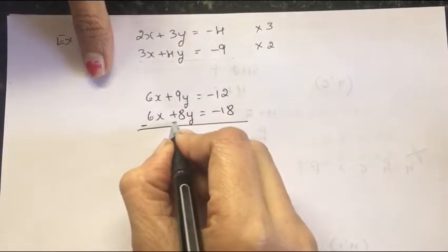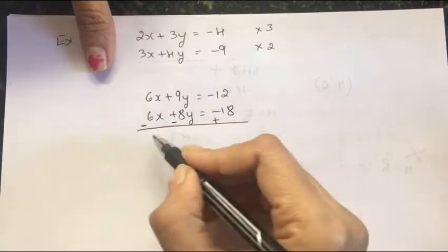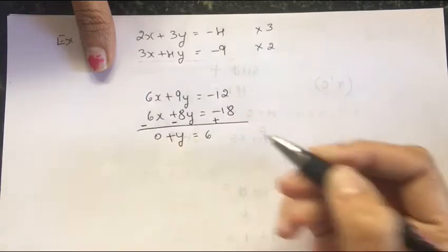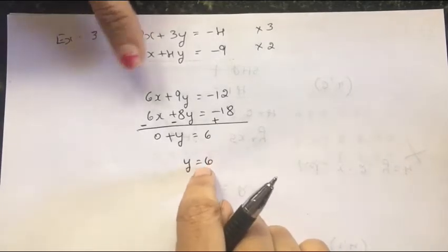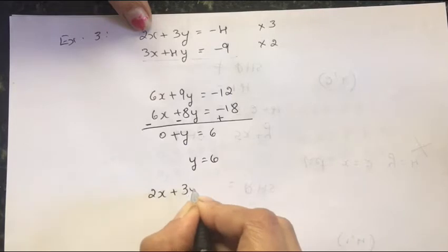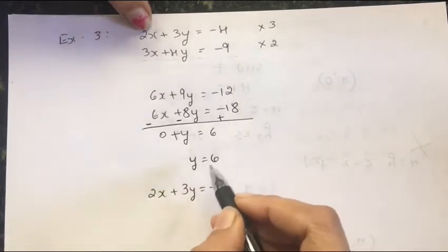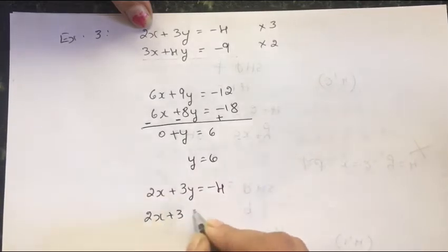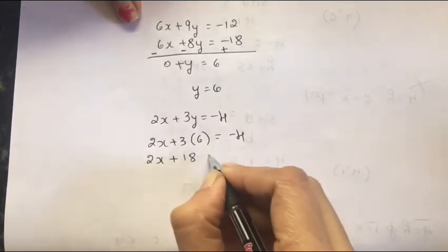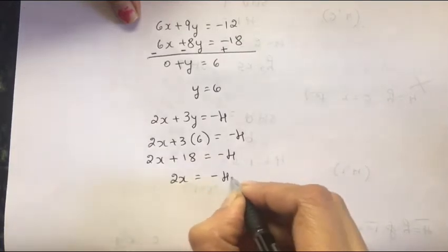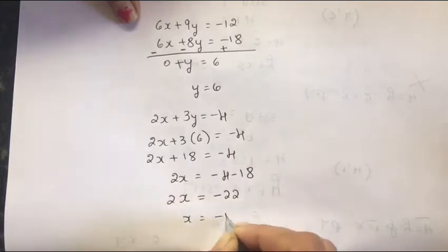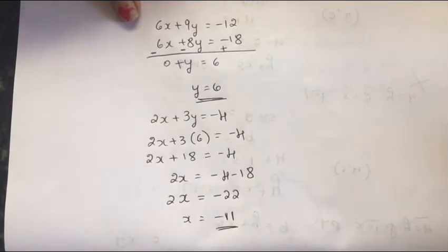Now subtract one equation from the other. The signs change: 6x minus 6x is 0, and 9y minus 8y is y, giving y equal to 6. Substituting y equal to 6 into the first equation 2x plus 3y equal to minus 4: we get 2x plus 18 equal to minus 4, so 2x equal to minus 4 minus 18, giving x equal to minus 11.